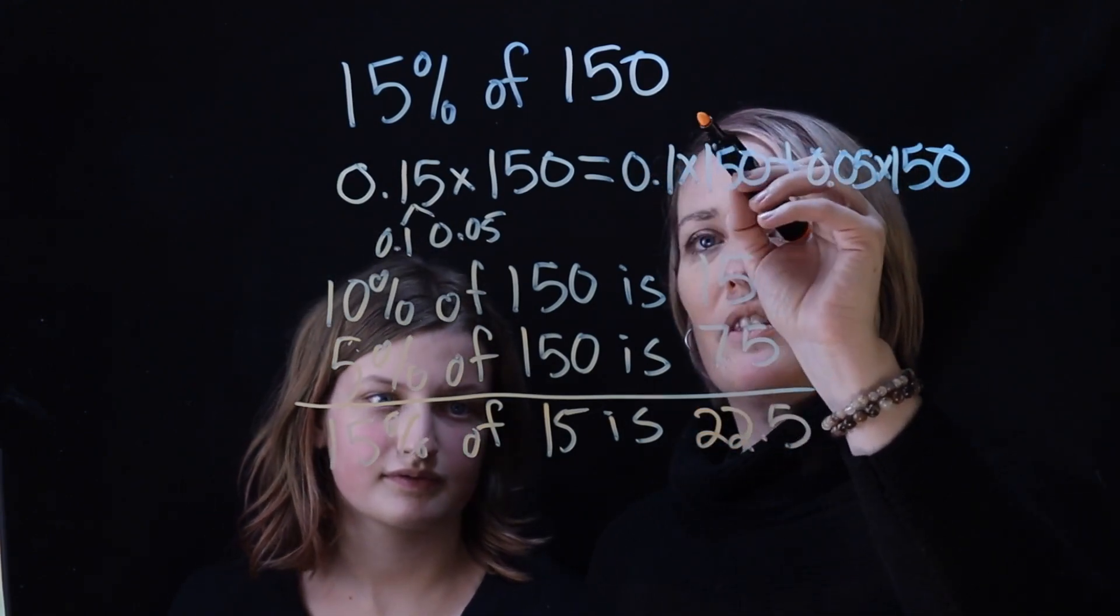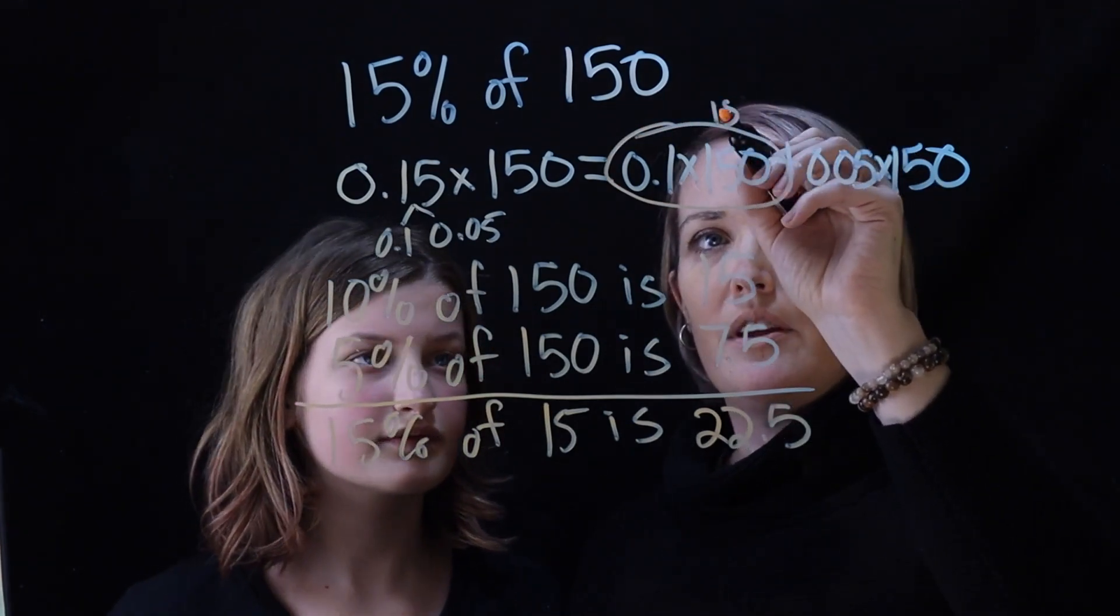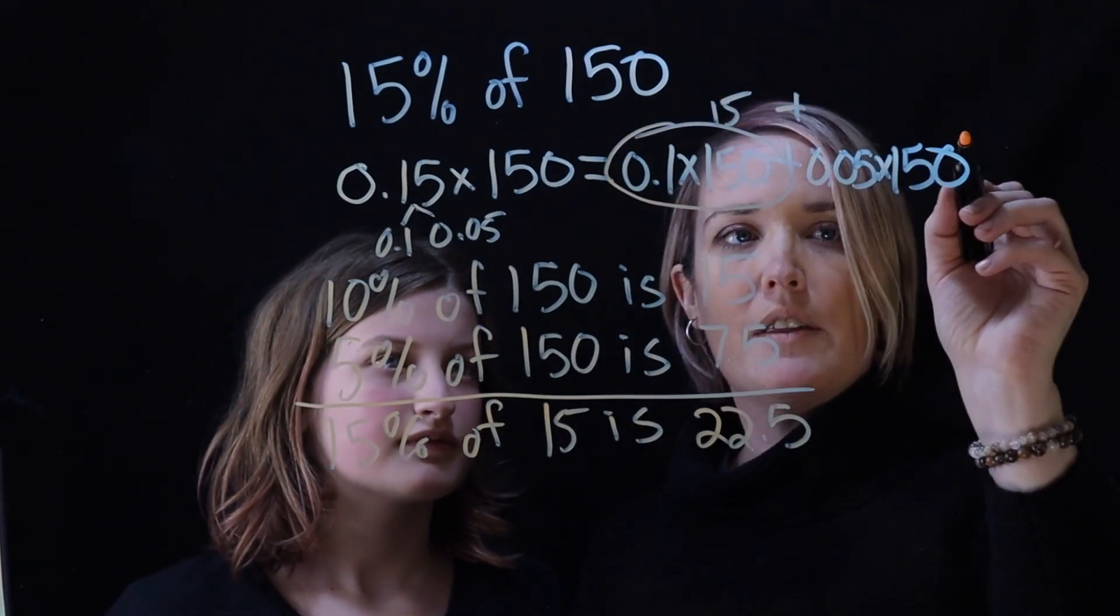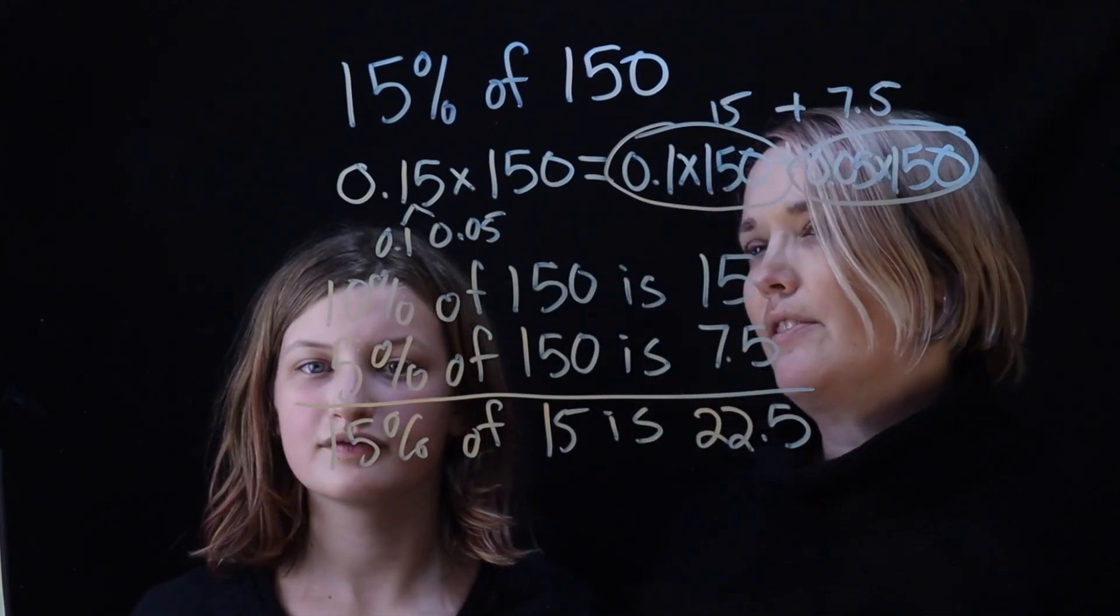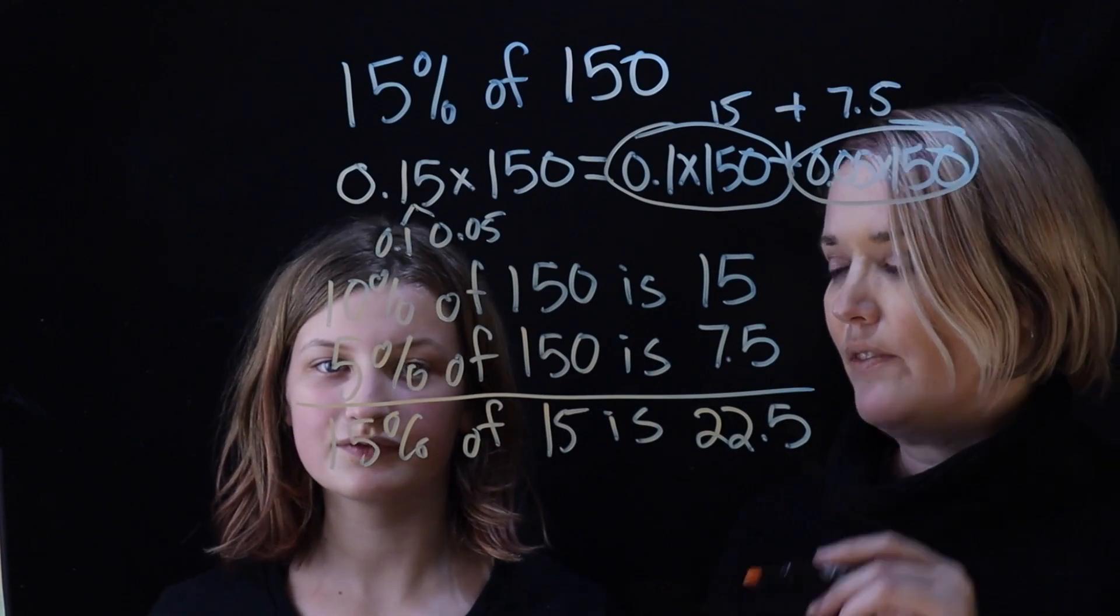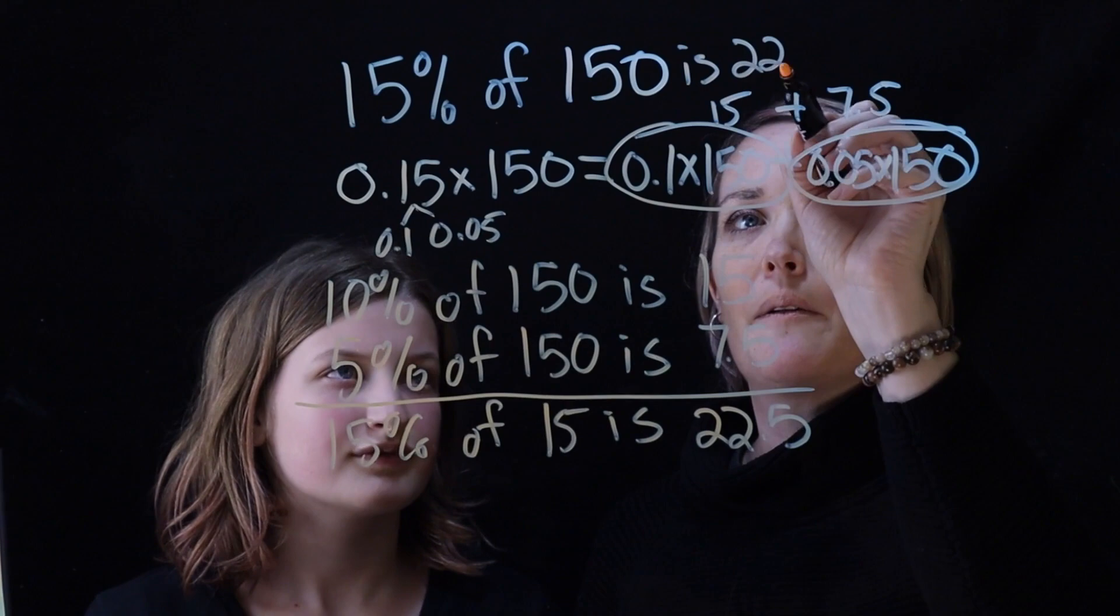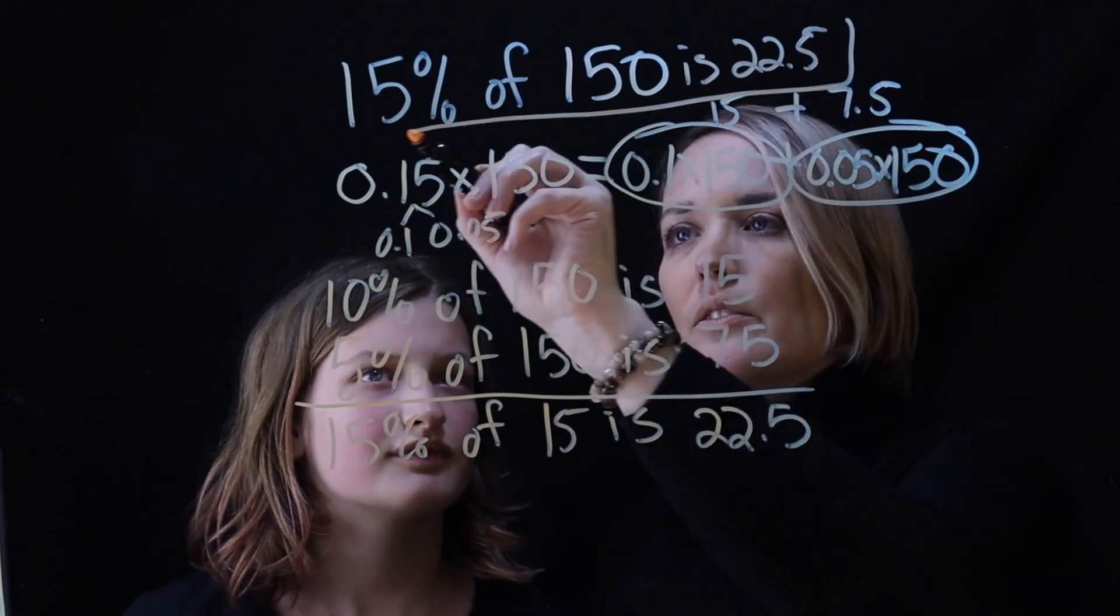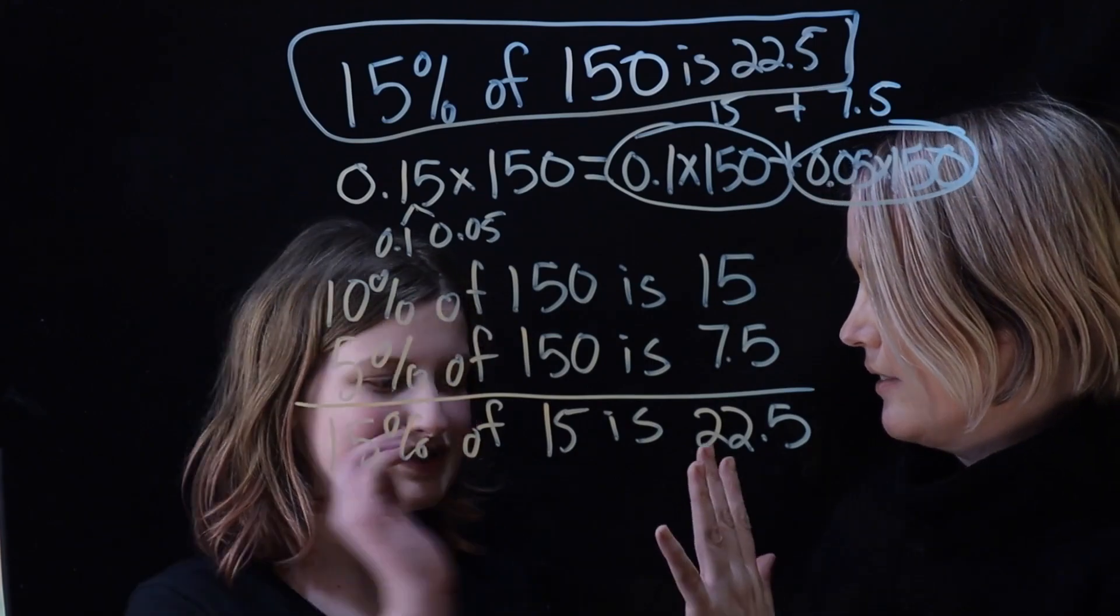So 22.5. And again, if we want to think of this here, this is 15 plus this is 7.5. So at the end of the day, 15 percent of 150 is 22.5. So I'll just write that down. And I'll do this so it's clear. That was awesome Anna. Thanks. Bye everyone.